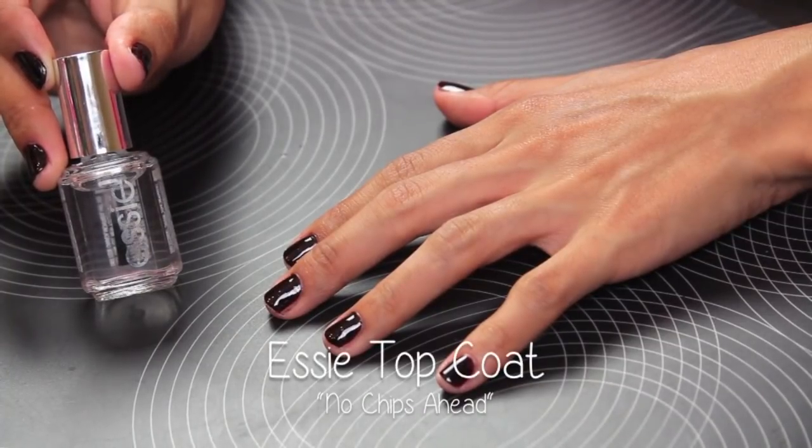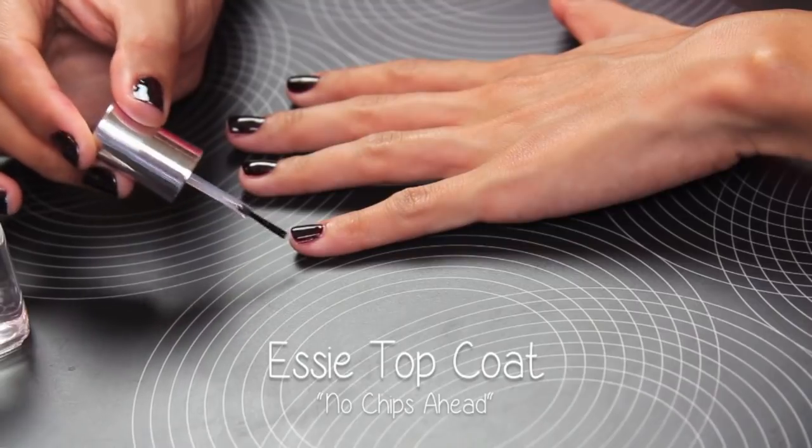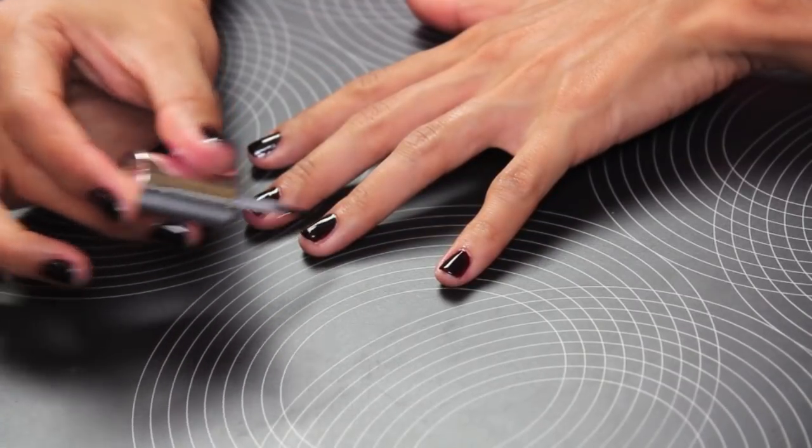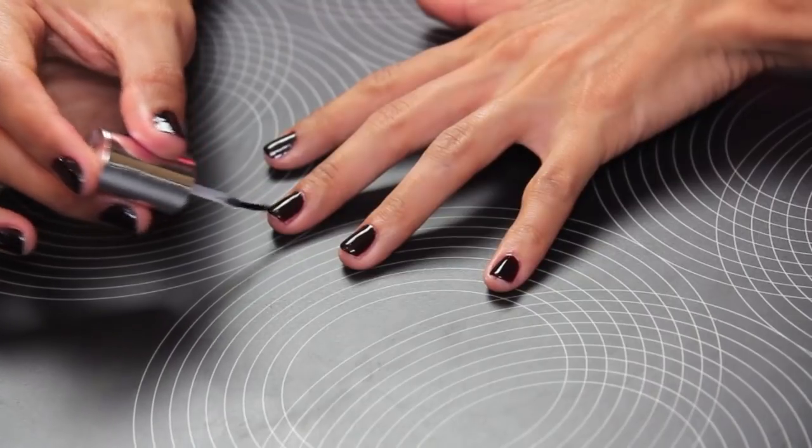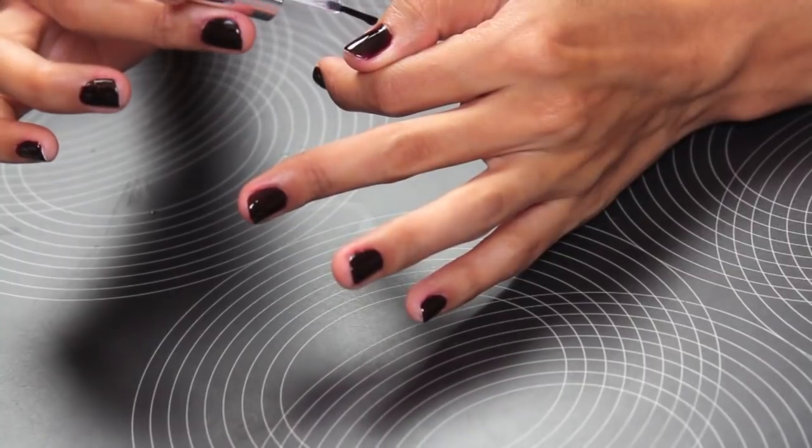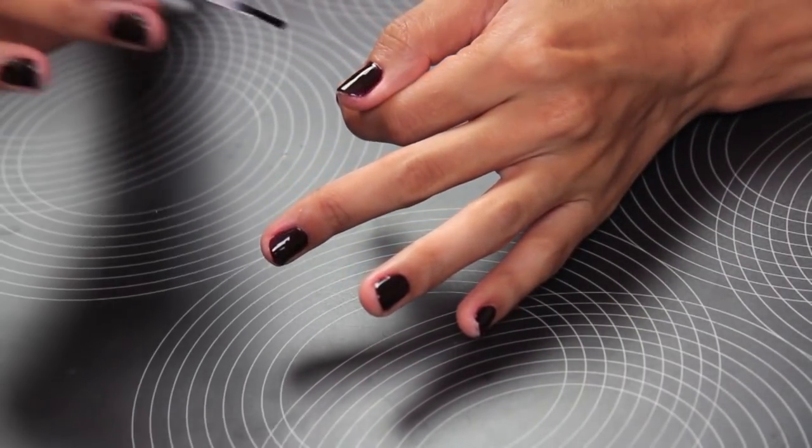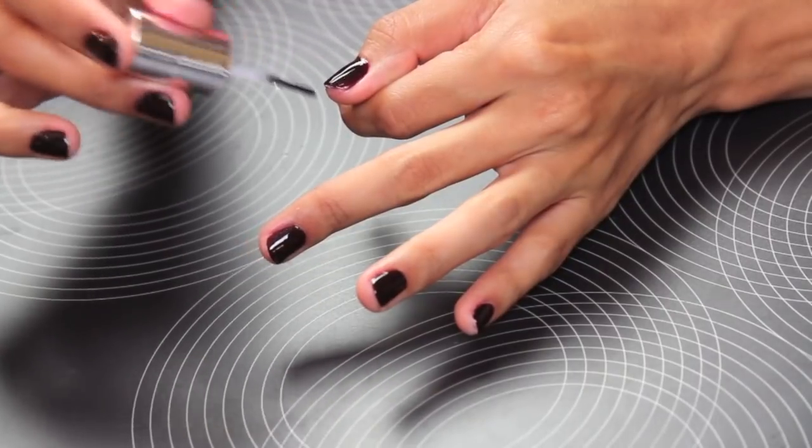Now the last step is to apply the No Chips Ahead. This is just a top coat from Essie—it's the first time that I'm trying it out. So far, out of five stars, I feel like I want to give it a four. It's not my favorite top coat, but it really does work. It doesn't chip your nails, so your manicure lasts a lot longer.